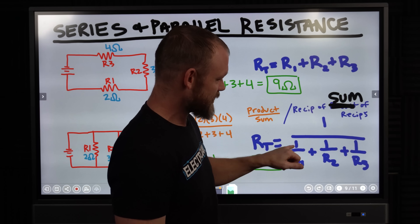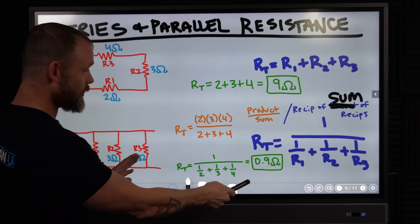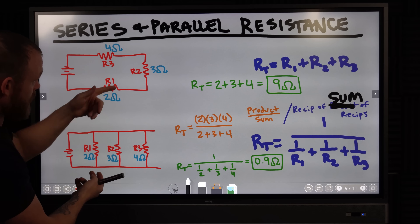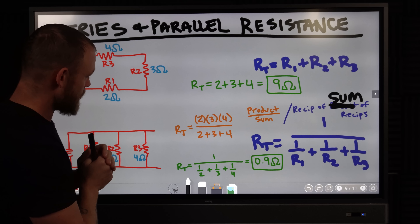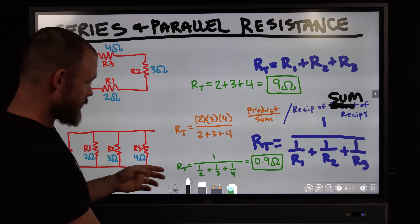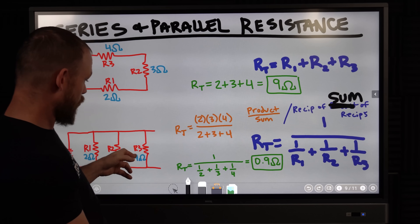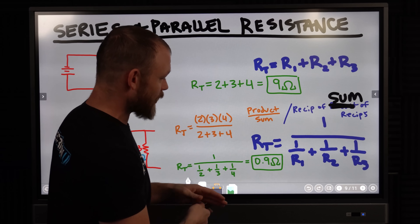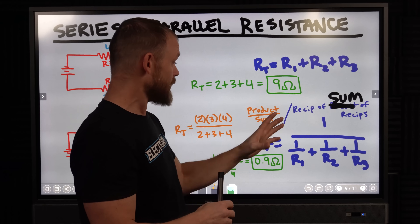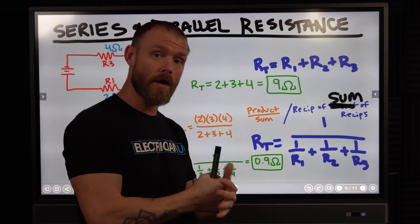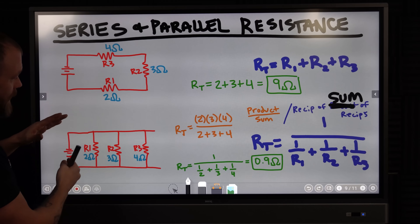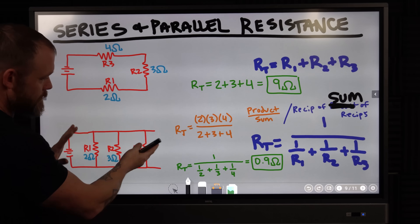For parallel resistance with the same values — R1=2 ohms, R2=3 ohms, R3=4 ohms — you take 1 over (1/2 + 1/3 + 1/4), add those up, then take the reciprocal, and you get 0.9 ohms instead of 9 ohms. Current travels through the circuit differently in parallel — it goes everywhere without being impeded in sequence, dramatically reducing total resistance.